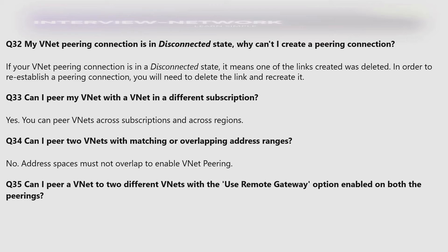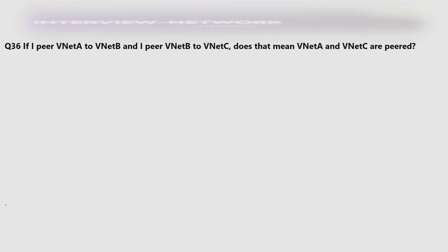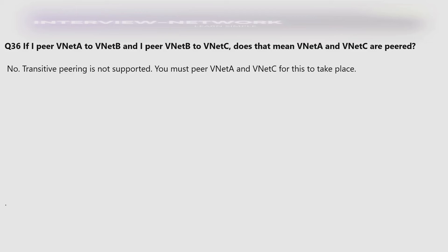Can I pair a VNet to two different VNets with the 'use remote gateway' option enabled on both pairings? No — you can only enable the 'use remote gateway' option on one peering to one of the VNets. If I pair VNet A to VNet B and VNet B to VNet C, does that mean VNet A and VNet C are peered? No — transitive peering is not supported. You must pair VNet A and VNet C for this to take place.